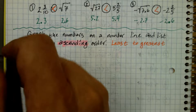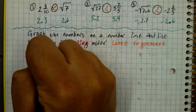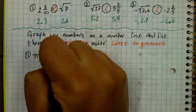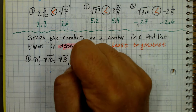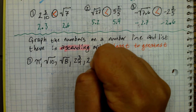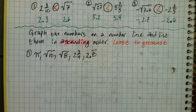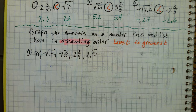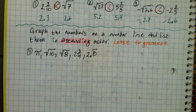Number one. Here are our numbers: pi, the square root of 10, the square root of 8, two and three-fourths, and 2.8 repeating. So right now we've got pi, square roots, decimals, and fractions. Let's just convert everything to a decimal — all our numbers are easier to compare in decimal form.